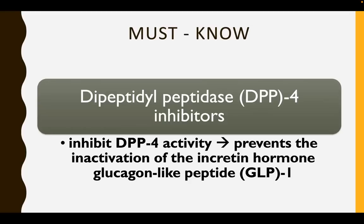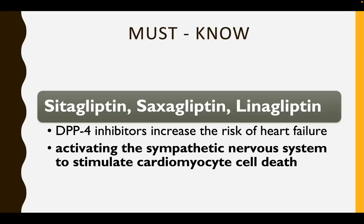Another must-know: dipeptidyl peptidase-4 (DPP-4) inhibitors. What does inhibition of DPP-4 activity do? This prevents the inactivation of GLP or glucagon-like peptide. Your gliptins — sitagliptin, saxagliptin, and linagliptin — are the DPP-4 inhibitors, and they actually increase the risk of heart failure by activating the sympathetic nervous system and stimulating cardiomyocyte cell death.